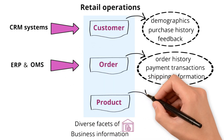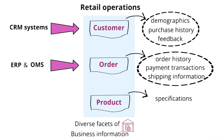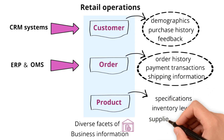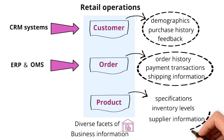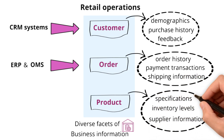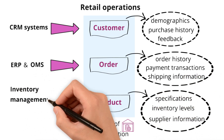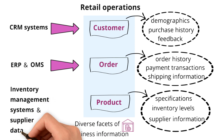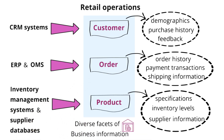And finally, product data, which contains specifications, inventory levels, and supplier information — the backbone of what's being sold. Inventory management systems and supplier databases play a key role in gathering this data.